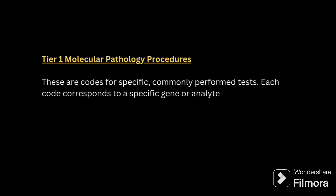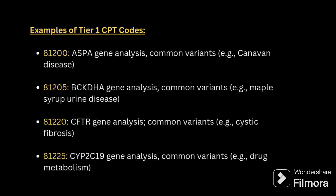First, Tier 1 molecular pathology procedures. These codes are for specific, commonly performed tests. Each code corresponds to a specific gene or analyte. Examples for Tier 1 are 81200, for gene analysis of common variants, and 81205, 81220, and 81225. You have to check which type of gene analysis is being done.